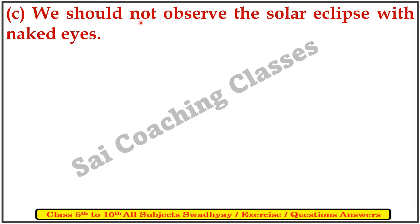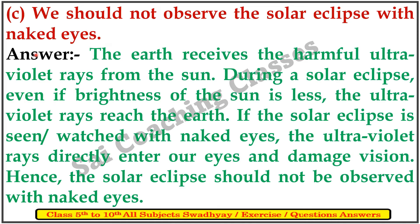C. We should not observe the solar eclipse with naked eyes. The earth receives harmful ultraviolet rays from the sun. During a solar eclipse, when the brightness of the sun is less, ultraviolet rays still reach the earth. If the solar eclipse is watched with naked eyes, the ultraviolet rays directly enter our eyes and damage vision. Hence, the solar eclipse should not be observed with naked eyes.